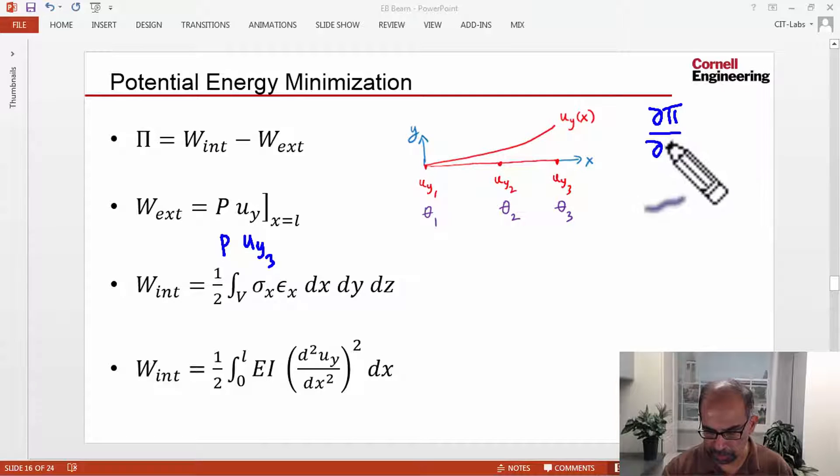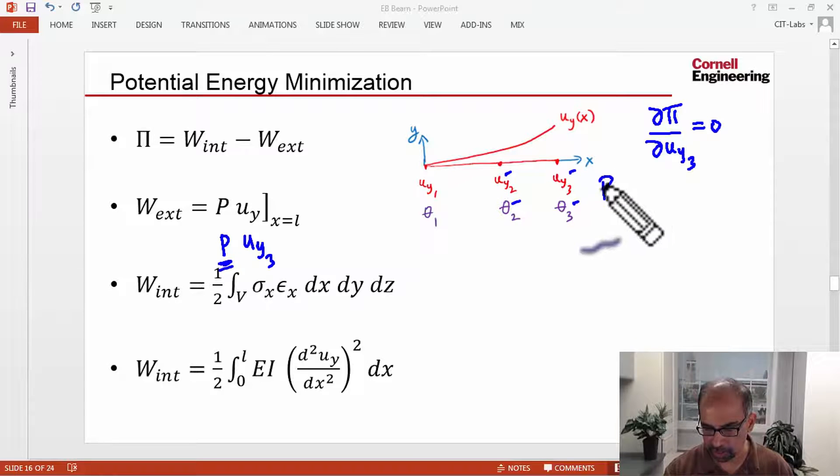When you differentiate that with respect to UY3, you will get P. So the algebraic equation will relate these four degrees of freedom to P, and it will be a linear relationship.